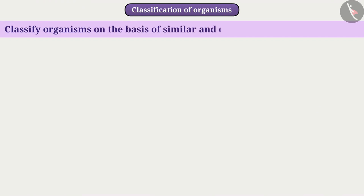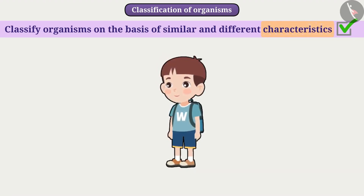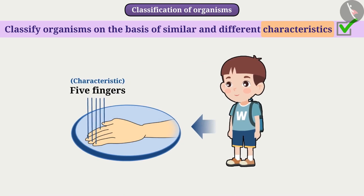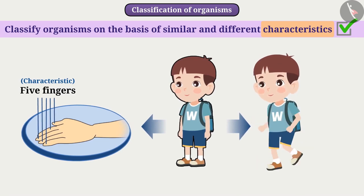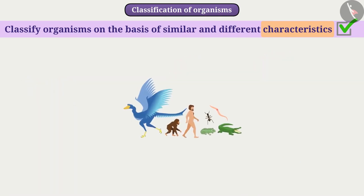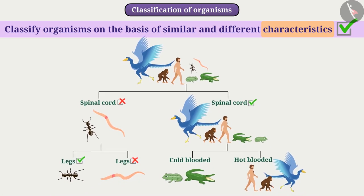Another way of classifying organisms is to classify them on the basis of similar and different characteristics. Characteristics are the visible features of an organism. For example, a specific feature such as having five fingers in the hand is a characteristic. Similarly, specific tasks such as the ability to run are also a characteristic. Organisms with similar characteristics are placed in one group, and then subgroups of that group are formed based on other characteristics.